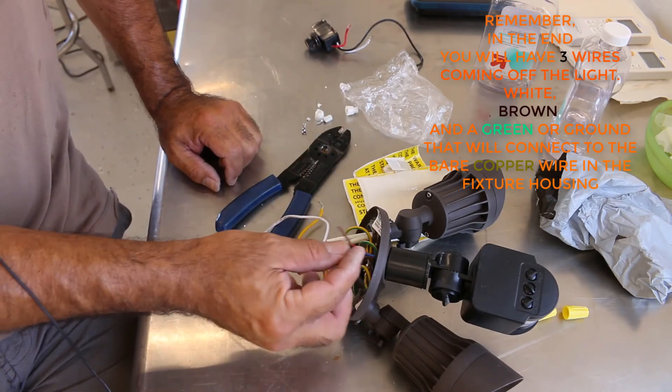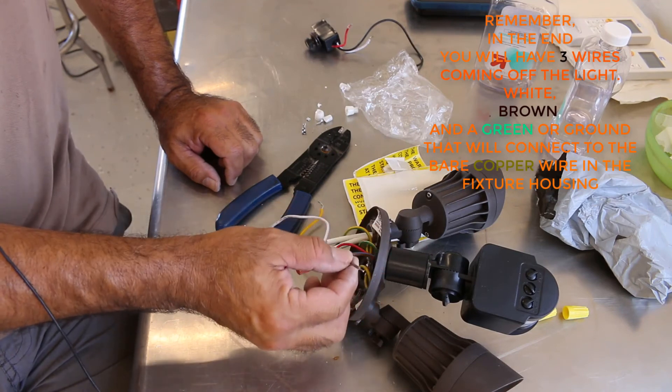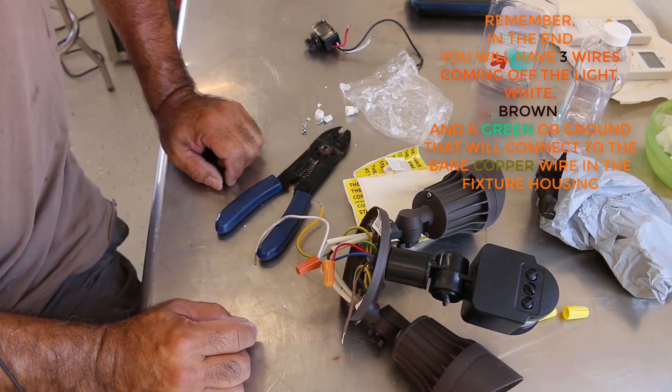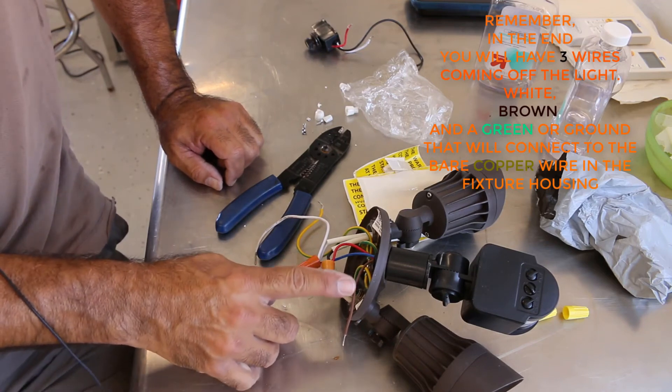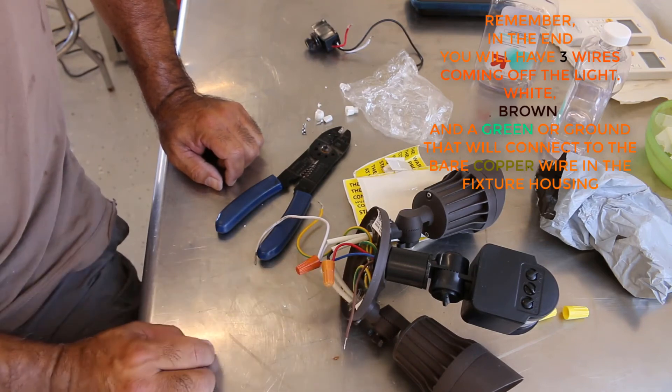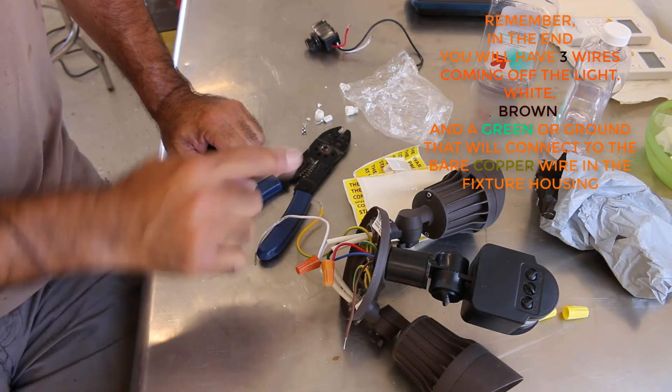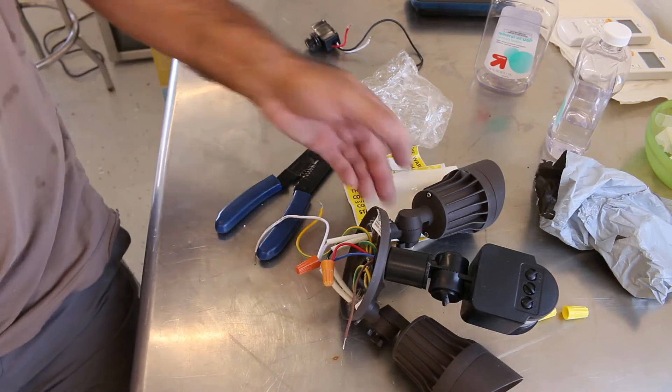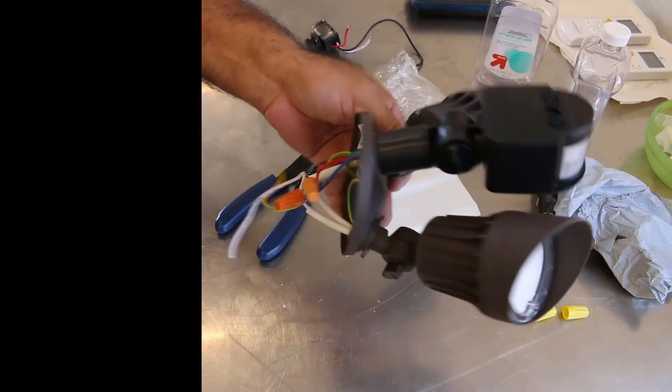The only difference is the Chinese part comes with a brown wire that's actually going to be black. If you really want to get technical, you could wrap a piece of black tape on that to let everybody know. But they're going to know anyway, because once they open this unit up, they're going to see the brown is going to the black. So there you have it. That's how you wire this sucker up.